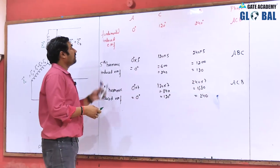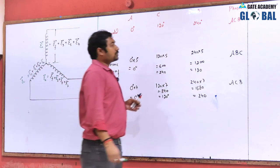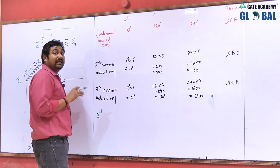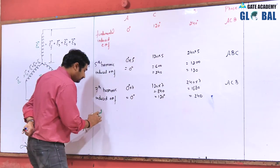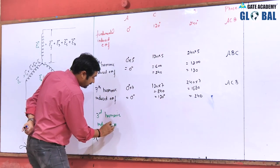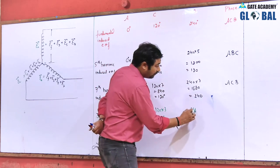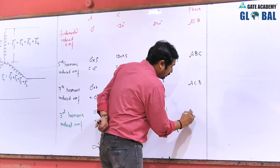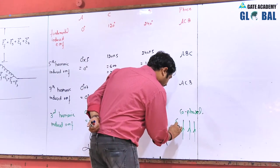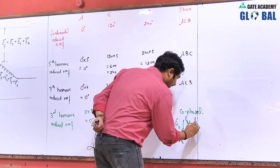You can say the phase sequence of the fundamental is A, B, C; the phase sequence of fifth harmonic induced EMF is A, B, C (opposite to fundamental); and the seventh harmonic is A, B, C (same as fundamental). Now observe the third harmonic induced EMF: 0 × 3 = 0 degrees, 120 × 3 = 360 degrees = 0 degrees, and 240 × 3 = 720 degrees = 0 degrees. So the third harmonic is cophasal — all induced EMFs EA3, EB3, and EC3 appear at the same instant.